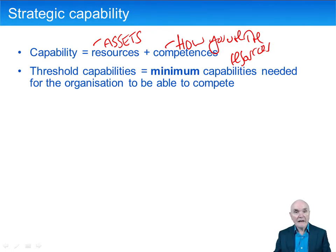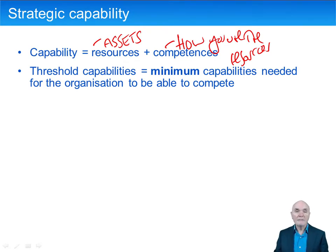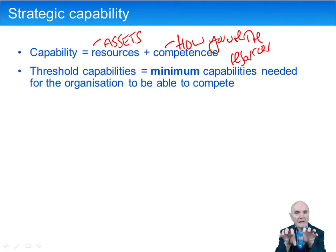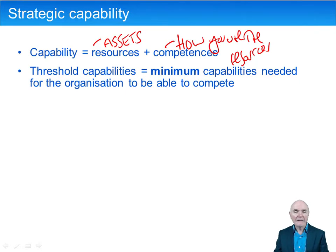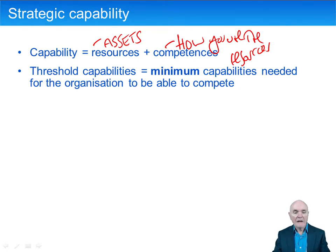Businesses at the very minimum must have what's known as threshold capabilities. These are the minimum capabilities needed just to compete at all. These are capabilities which really let the business hang on by its fingertips — it's making a profit, but a miserable profit, and it's not going to have perhaps a very long-term future. But threshold capabilities are the first thing you need.